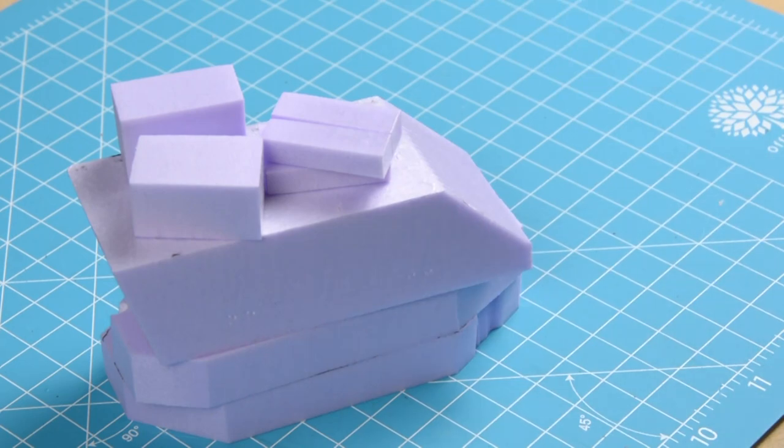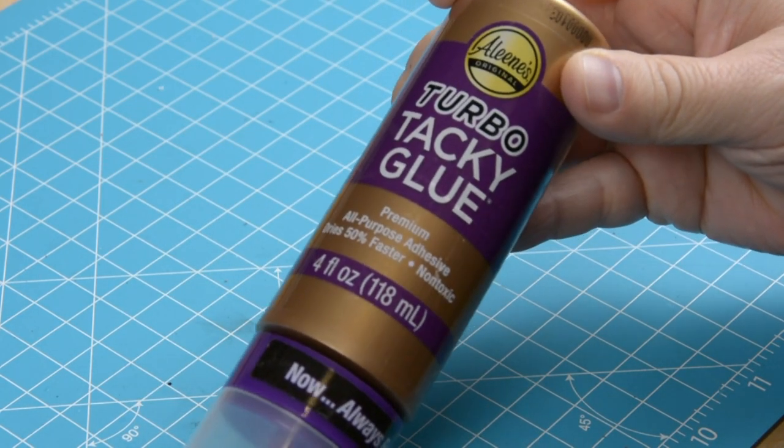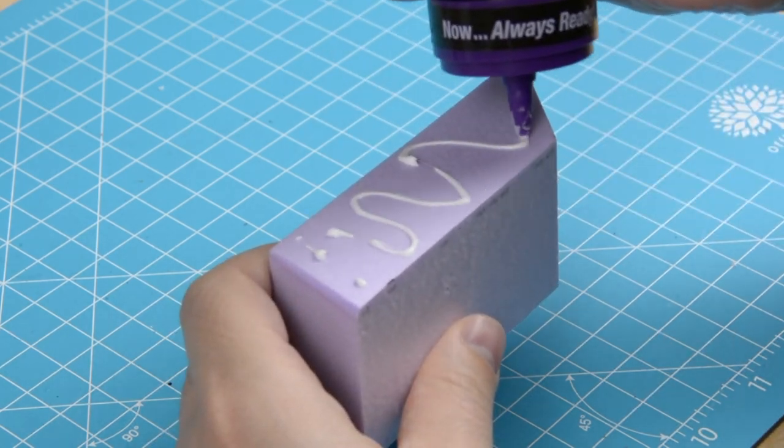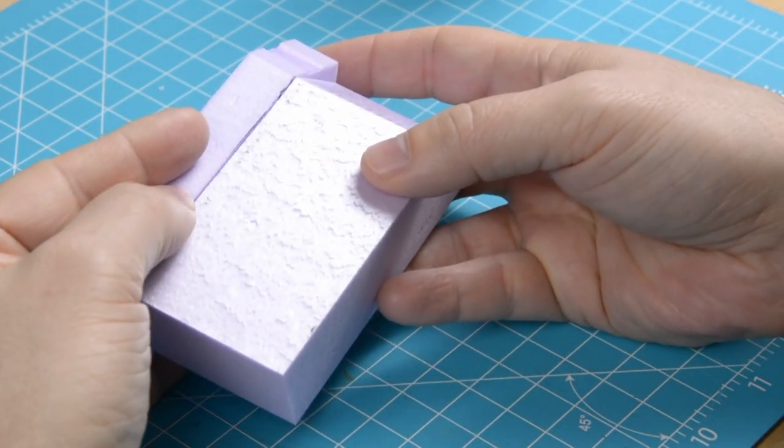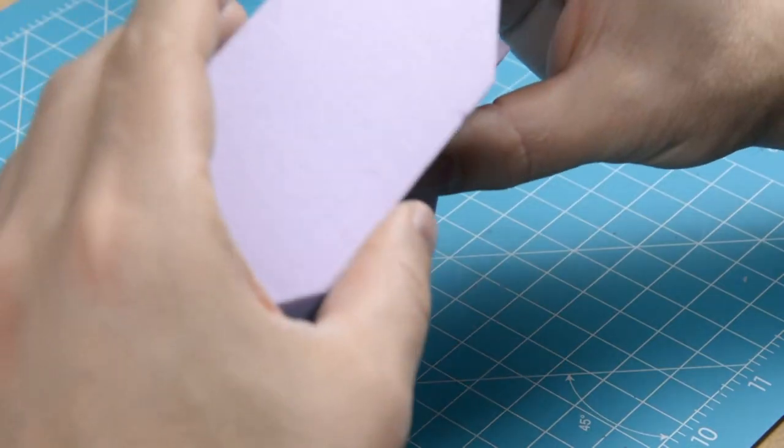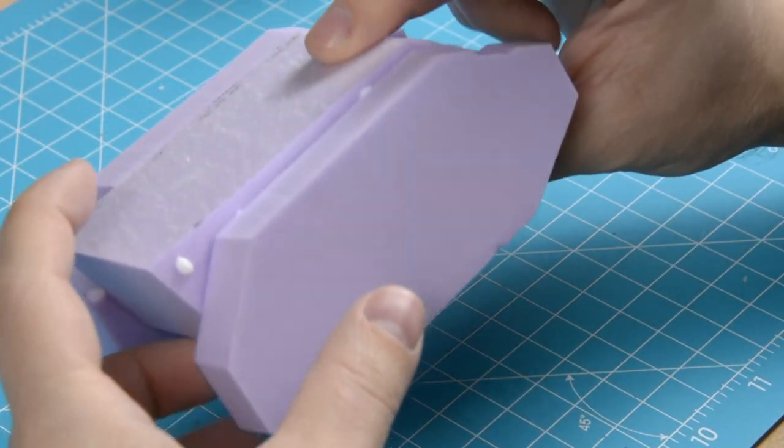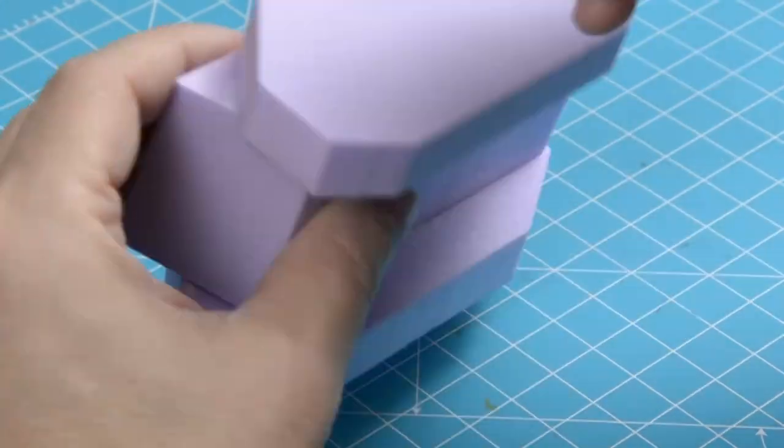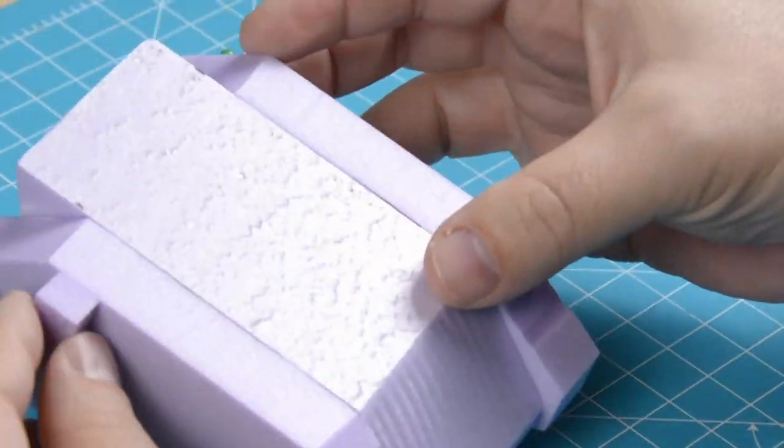Now we have all the parts for the hull ready, let's stick them together. I'm gonna use a fast setting tacky glue for that. I'm just gonna stick some pins in the model to make sure the foam doesn't move while the glue is setting.